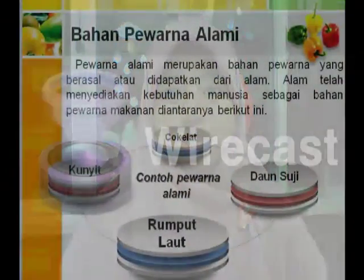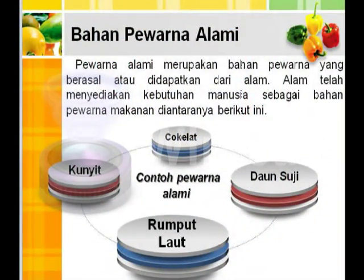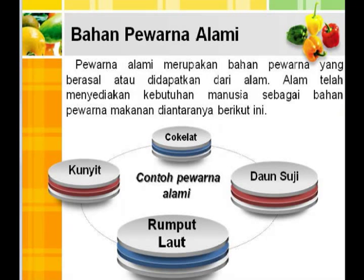Bahan pewarna alami merupakan bahan pewarna yang berasal atau didapatkan dari alam. Alam telah menyediakan kebutuhan manusia sebagai bahan pewarna makanan. Di antaranya, contoh pewarna alami yaitu coklat, daun suji, rumput laut, serta kunyit.